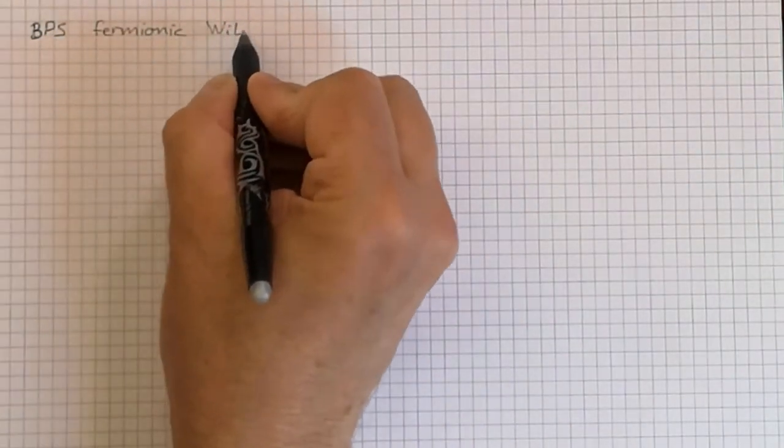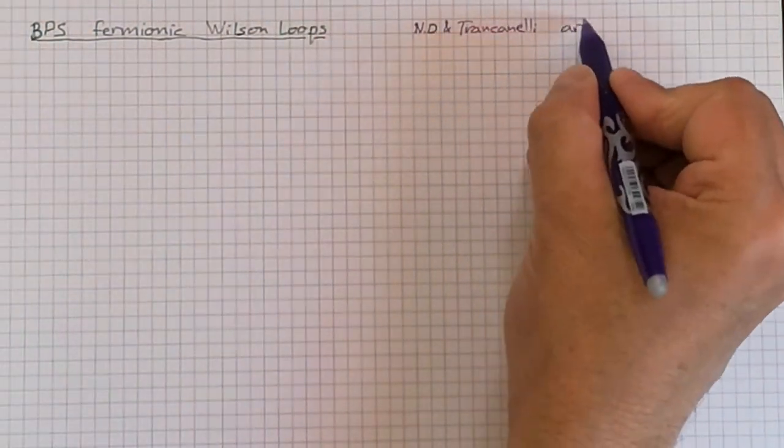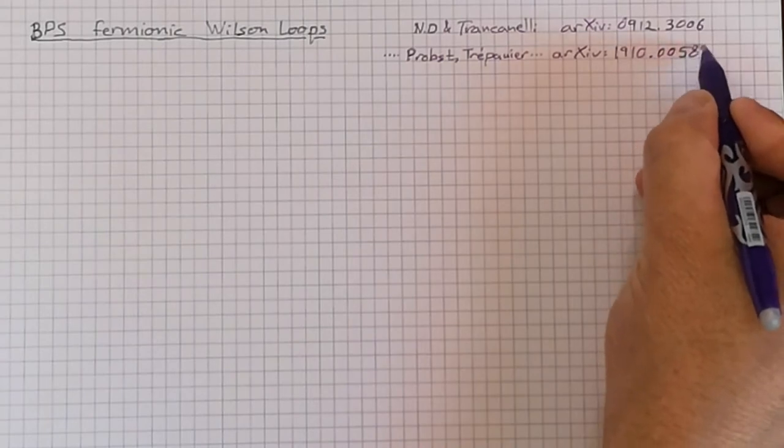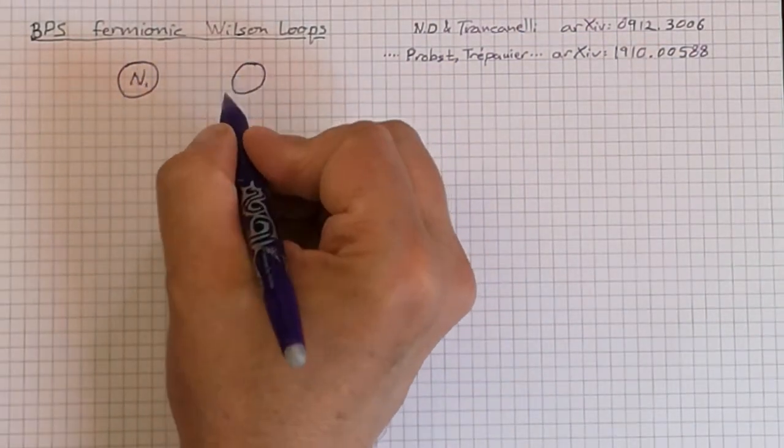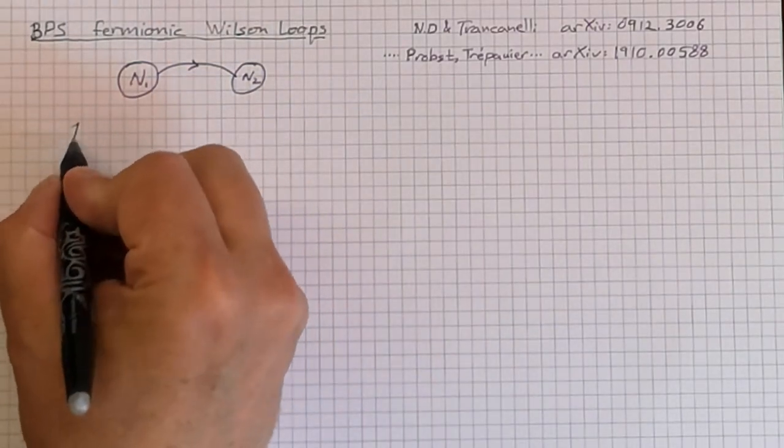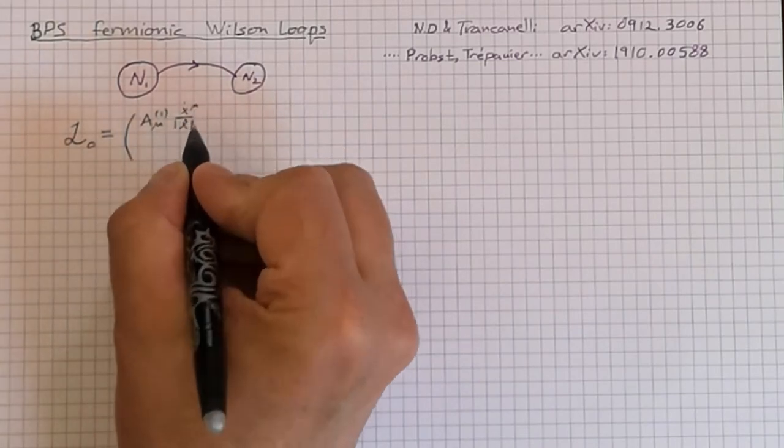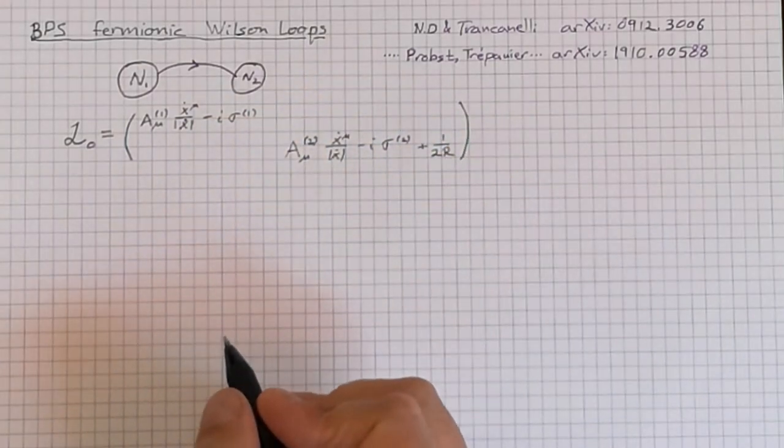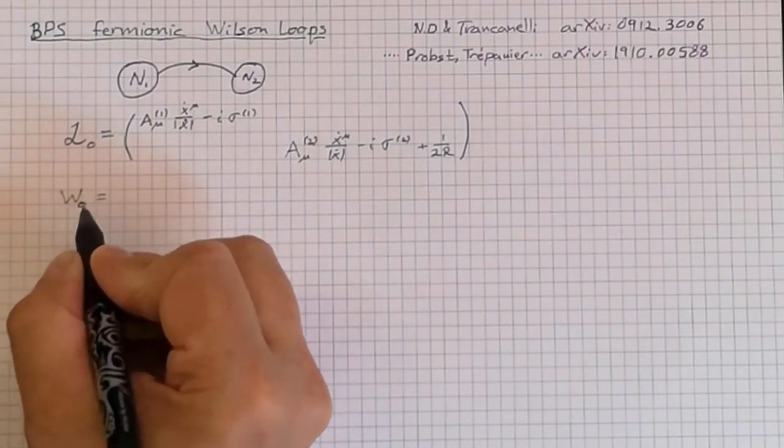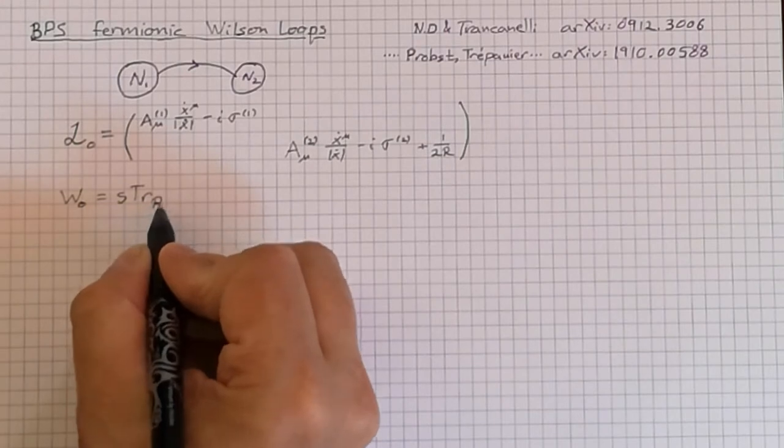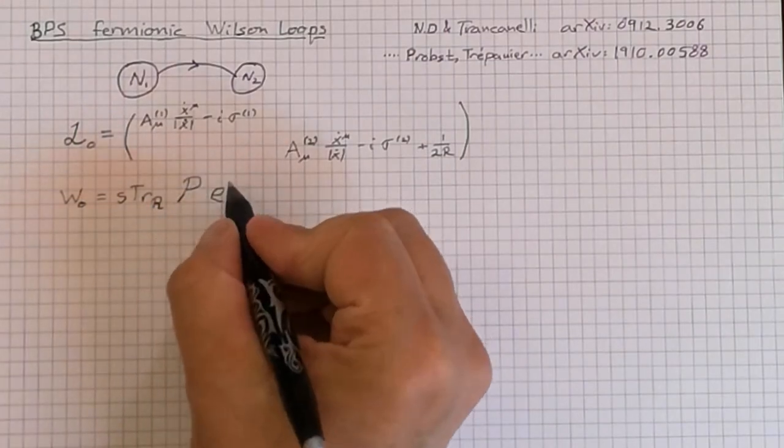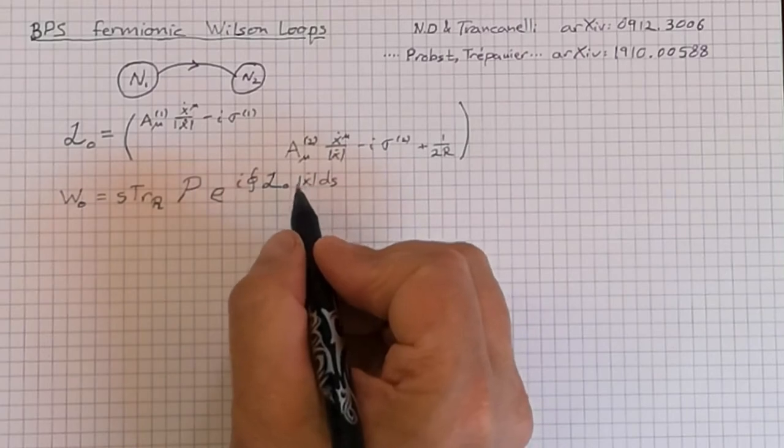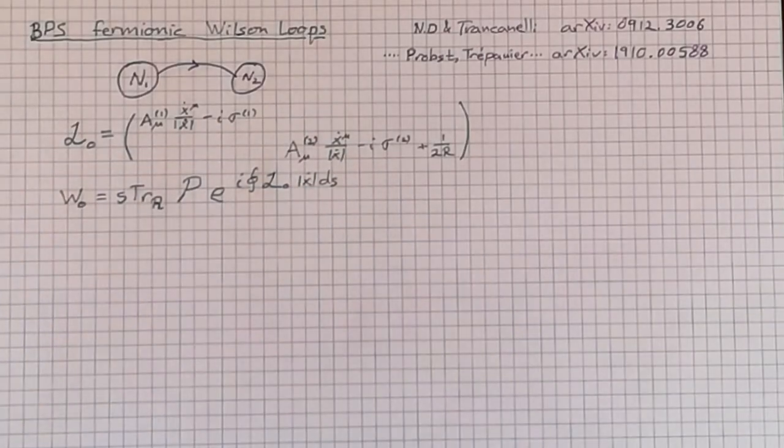BPS fermionic loops were found by me and Diego Trancanelli over 10 years ago, and the explanation I provide here is based on a recent paper with Maxime and Malte. Here, let me discuss the theory with the following quiver, with two nodes. And you can define a connection L0 involving both gauge fields. And it is an N1 plus N2 times N1 plus N2 matrix. And I shifted the second connection by 1 over 2R. The reason for that is a technical reason that will be important later. The Wilson loop based on this L0, W0, is the supertrace of the path-ordered exponential of the integral of L0 along the circle, taken in a representation of U(N1 plus N2) or U(N1|N2) as a supermatrix.